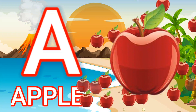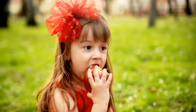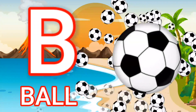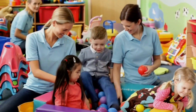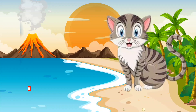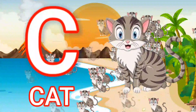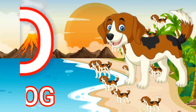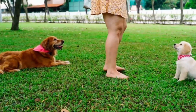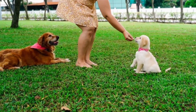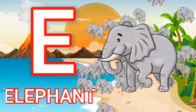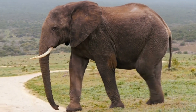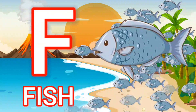A for apple. B for ball. C for cat. D for dog. E for elephant. F for fish.